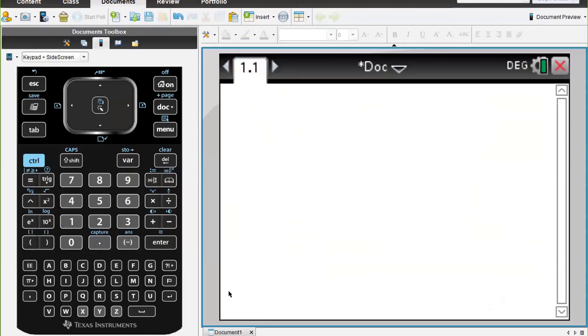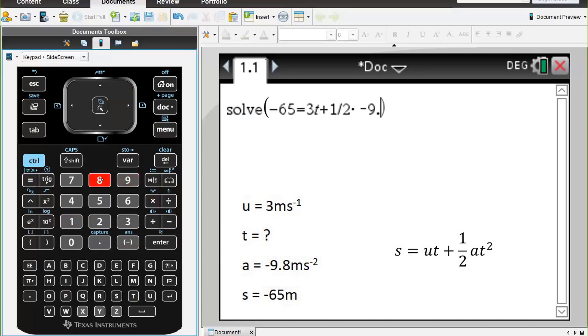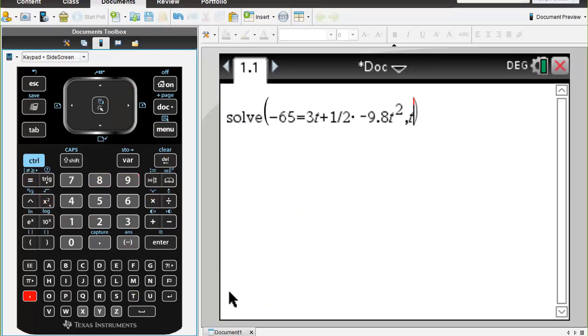So we're in the calculator page and we're going to use solve. So menu 3, 1. Going off our conditions, we have -65 = 3t + ½ times -9.8t² and we're solving for t and we press enter.